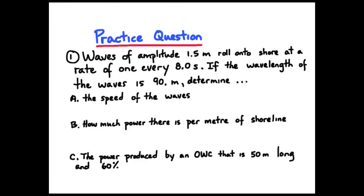C, the power produced by an oscillating water column that is 50 meters long and is 60% efficient. Okay, good point to pause your viewer, grab a pen and paper, try these questions.